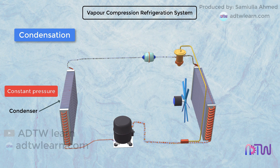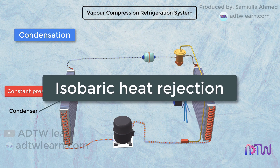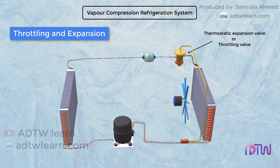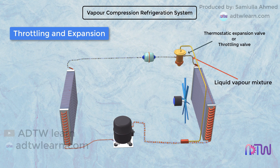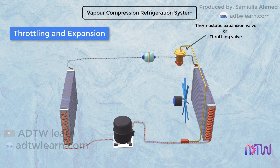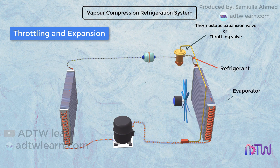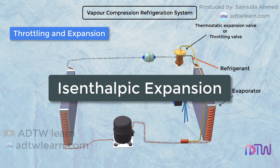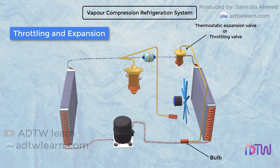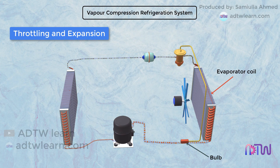The refrigerant flowing through the condenser is at constant pressure; therefore, we call this process isobaric heat rejection. When the refrigerant enters the throttling valve, it expands and its pressure reduces. As a result, the temperature drops, and the refrigerant leaves the throttling valve as a liquid-vapor mixture. The throttling valve plays two essential roles: first, it maintains a pressure difference between the low and high pressure sides; second, it controls the amount of liquid refrigerant entering the evaporator. This step is called isenthalpic expansion. Normally, a thermostatic expansion valve is used, with a bulb that senses the temperature of the refrigerant coming out from the evaporator coil, adjusting the amount of refrigerant passing through the expansion device.